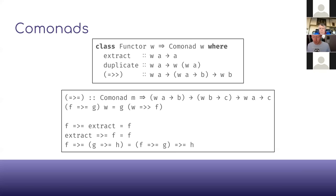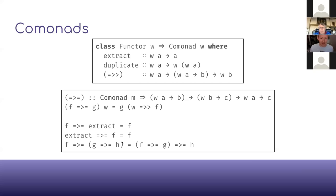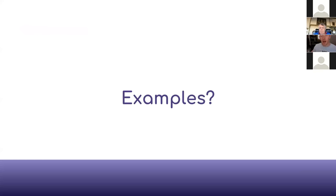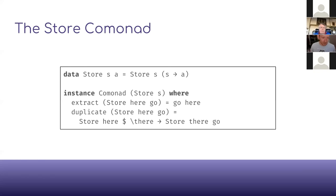Just as we had Kleisli composition, now we have co-Kleisli composition. For a comonad, co-Kleisli arrows have the W on the left: given a function inspecting W A to produce B, and a function inspecting W B to give C, you compose them to get a function W A to C. People talk about comonads as being about 'context' or 'neighborhoods' — an A in context gives a B, a B in context gives a C, and the context gets plumbed through. The co-Kleisli category is the model, and the comonad laws ensure this.